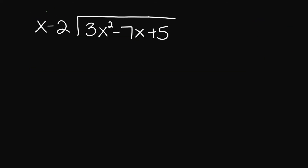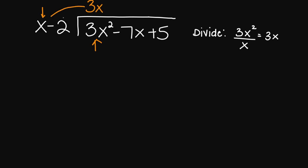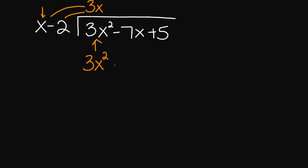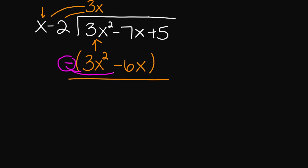Let's look at this example. The way I like to think about these division problems is: what number do I need to multiply x with that's going to give me 3x squared? It's going to be 3x. If I multiply 3x times x, this gives me 3x squared. Then we multiply 3x times negative 2, which gives us negative 6x. Now we're going to subtract, and it's very important that you remember this negative sign out in front applies to all of your terms inside the parentheses.